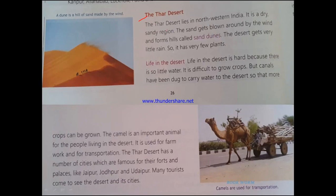The sand gets blown around by the wind and forms hills called sand dunes. The desert gets very little rain, so it has very few plants. The Thar Desert lies in the northwestern part of India, in Rajasthan. It is a dry and sandy region. Because sand is dry and lightweight, it can be easily blown around by the wind — the wind picks up sand from one place and deposits it in another.